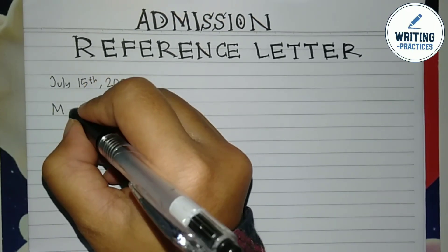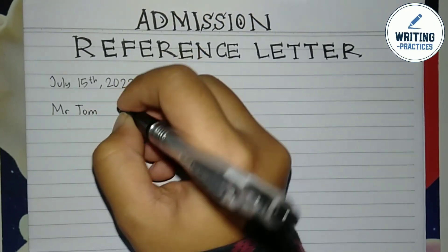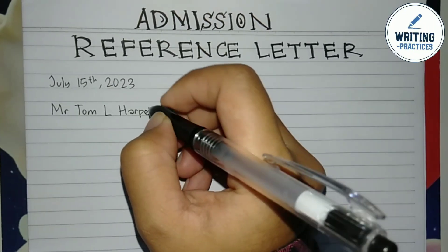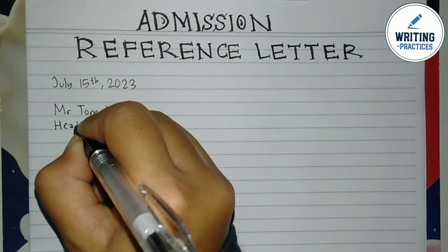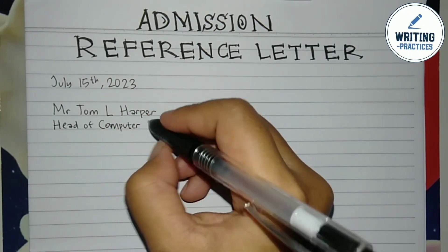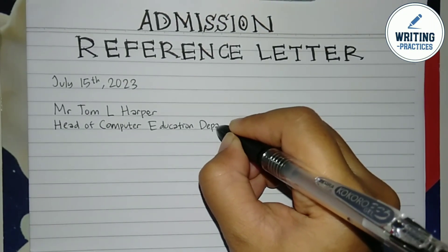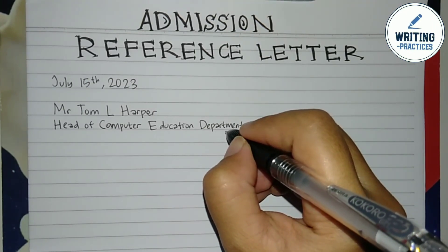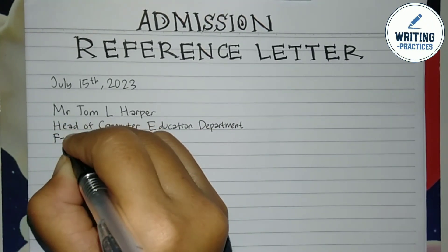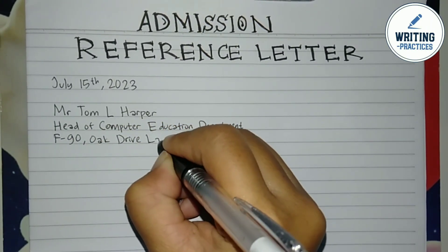Writing Practices will show you how to write an admission reference letter. First of all, write the date today, and then write the recipient's details. You need to write the full name, the position or title, and the university name. Also write the address of the university and the specific building of the department. Don't forget to write the city, state, and the zip code.